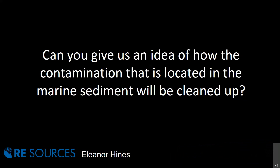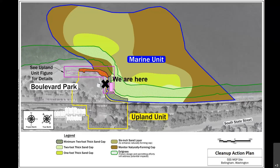Thank you, John. Looking out into the bay, can you give us an idea of how the contamination that is located in the marine sediment will be cleaned up? The selected cleanup action for the marine sediment portion of the site consists of monitored natural recovery, enhanced natural recovery, amended sand cap, and conventional sand cap. Monitored natural recovery will be used furthest out in the bay where the sedimentation rate, or what we call natural recovery in the cleanup world, has been studied and determined effective and will be protective for that part of the sediment site.